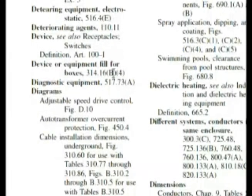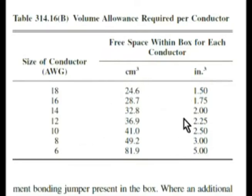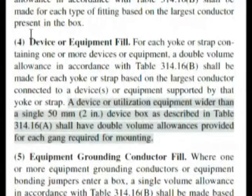So we'll go to section 314.16B4. But when we get there, I want to go to the table first and show you something. Here's our table 314.16B — volume allowance required per conductor. But does this help us find our answer? The question was about each strap containing one or more devices counting as blank volume allowance. The table talks about the size of a wire in that box, but what does this have to do with our device? We would have gone down the wrong place. 314.16B4 is what we found in the index, so let's go there right now.